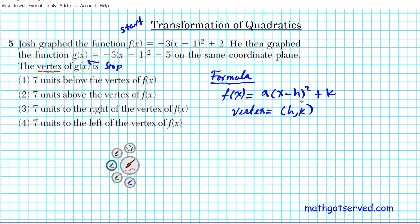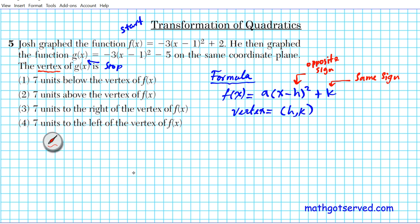For the k component, you take the same sign — that's a common mistake many students make. Now we find the vertices of both functions. For f(x) = −(x − 1)² + 2: h = 1 (opposite of −1) and k = 2, so the vertex of f is (1, 2). Then for g(x) = −3(x − 1)² − 5: h = 1 and k = −5, so the vertex of g is (1, −5).